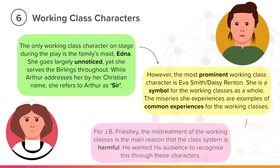The most prominent and important working class character in the play is Eva Smith. She is a symbol for the working classes as a whole. The misery she experiences are examples of common experiences for the working classes, meaning that what happened to her was not unusual or remarkable. For J.B. Priestley, the mistreatment of the working classes is the main reason the class system is harmful. He wanted his audience to recognise this through these characters and what they have to experience.